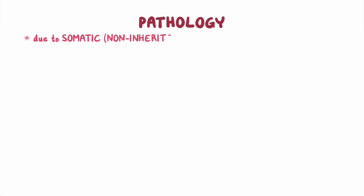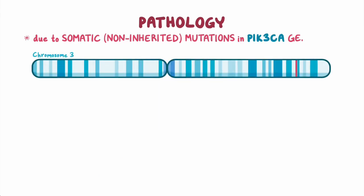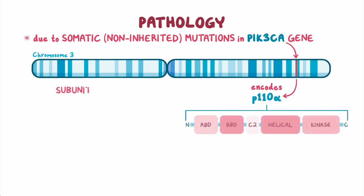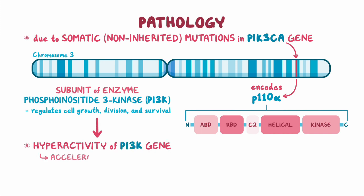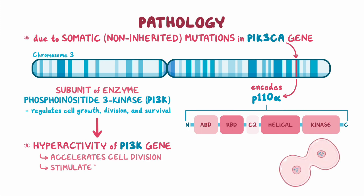PROS is due to somatic, or non-inherited, mutations in the PIK3CA gene, which encodes P110-alpha. This is a subunit of the enzyme phosphoinositide 3-kinase, or PI3K, which regulates cell growth, division, and survival. These mutations result in hyperactivity of PI3K, which accelerates cell division and stimulates the production of growth factors and hormones, contributing to tissue overgrowth.